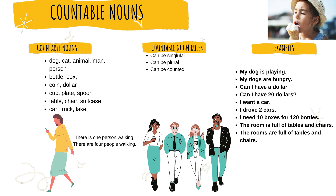Here are some examples. My dog is playing. My dogs are hungry. The verb has to be in agreement with the noun or the subject, because the noun is the subject of the verb. When it's plural: dogs are hungry. Can I have a dollar? Can I have $20? Dollars are countable. I want a car. I drove two cars. I need 10 boxes for 120 bottles. The room is full of tables and chairs. The rooms are full of tables and chairs.